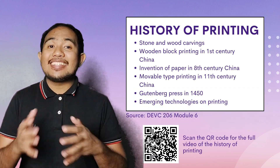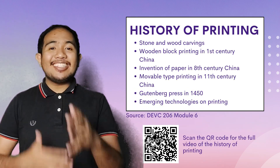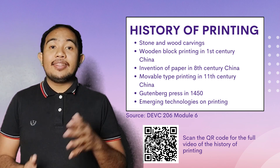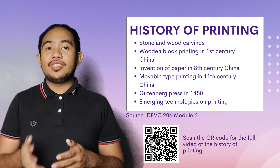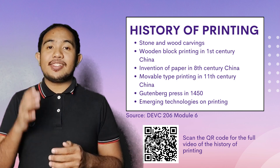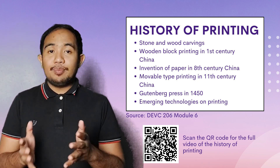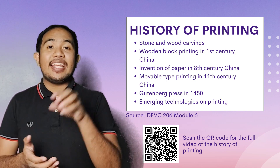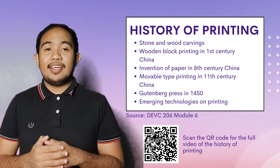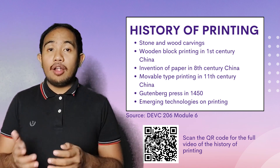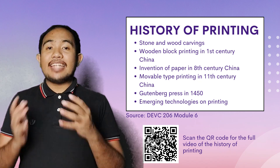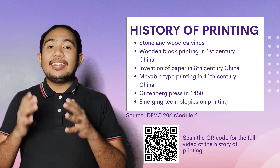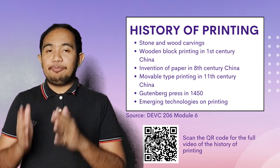Printing has a rich history. It traces back to cave paintings and wood or stone carvings. The earliest printing methods emerged in China during the 1st century. They carved symbols on wooden blocks, applied ink, and then transferred the image onto a surface. Later on, during the 8th century, the Chinese people invented paper, and in the 11th century, they developed movable type printing.